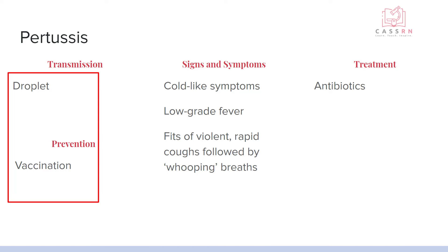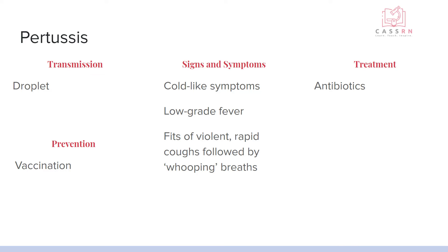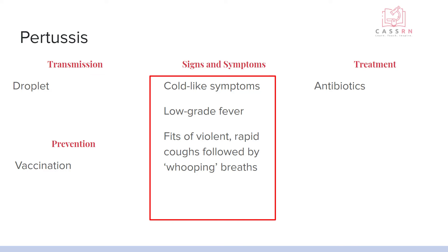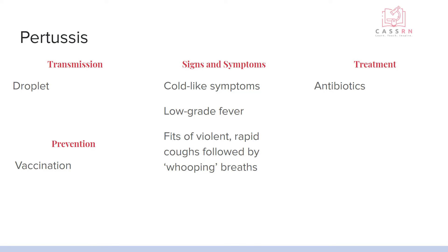Pertussis is also droplet transmission. It has a vaccine and presents with cold-like symptoms. You're going to have a fever, and then there's violent, rapid coughing followed by a whooping inhalation — this is why it's also called whooping cough. Look up some videos of what that sounds like to understand what pertussis is. This one is also treated with antibiotics.